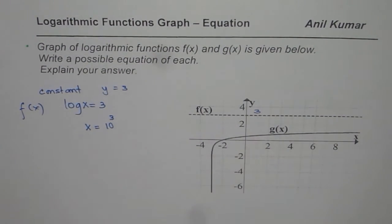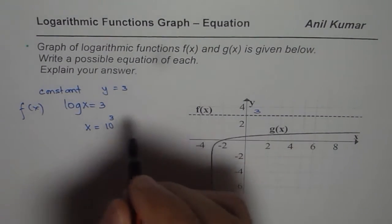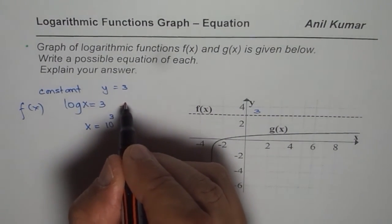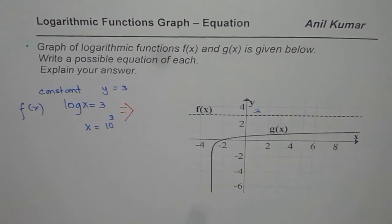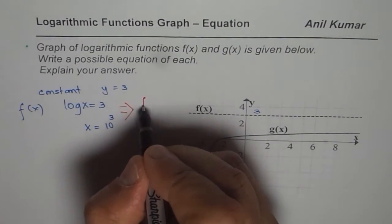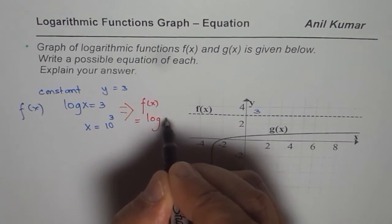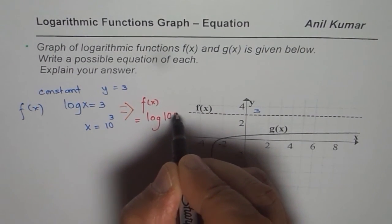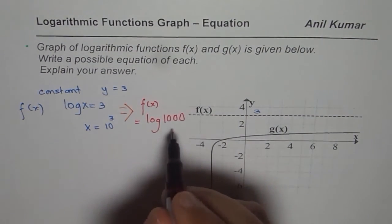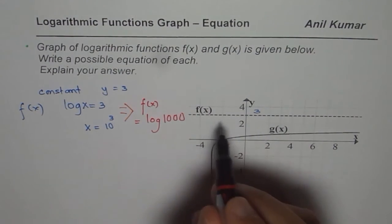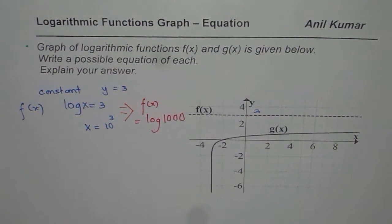So that gives you an idea, how to write this function. So from all this, what we can conclude is our function f of x should be, could be like this. So we could say f of x is equal to log 1000 or 10 to the power of 3. So what is the value of log 1000? Log 1000 is 3 for any value of x. You get the point.